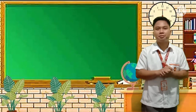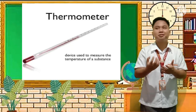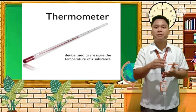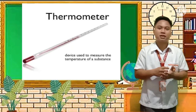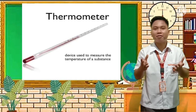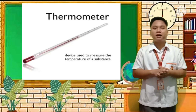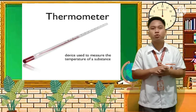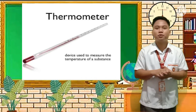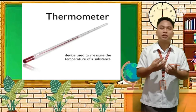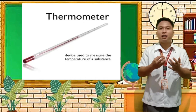Next we have the thermometer. The thermometer used in laboratory experimentation is different from the one we use when we have a fever, but their function is the same. A thermometer is a device used to measure the temperature of a substance — whether the temperature is high, low, or just right. As with humans when sick, we use the thermometer to check if the temperature is normal or too high.